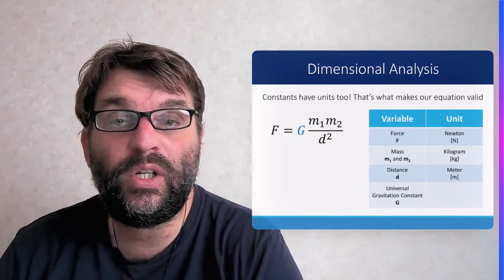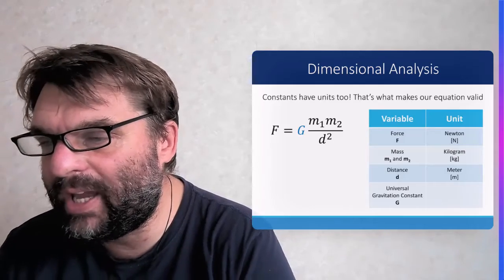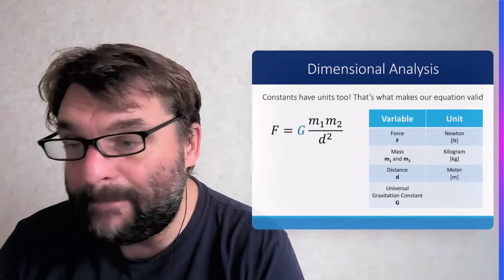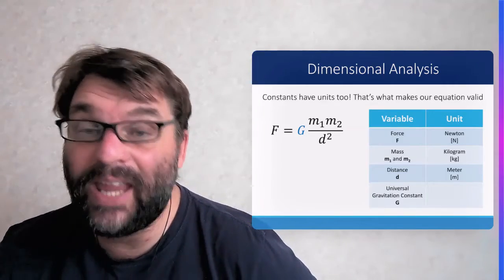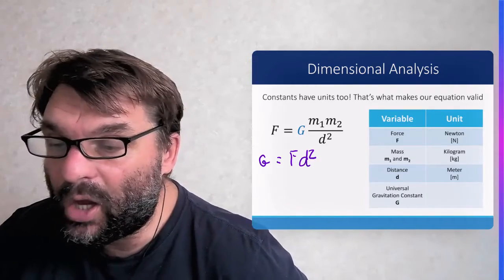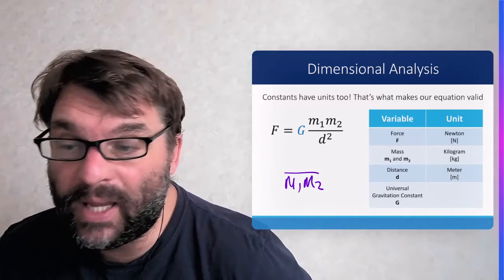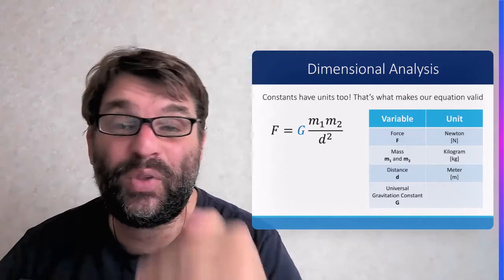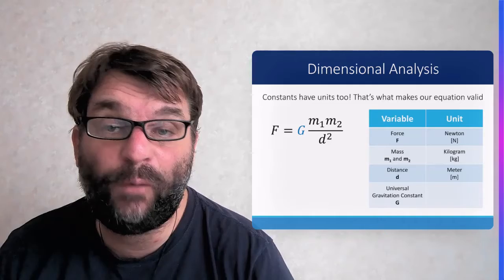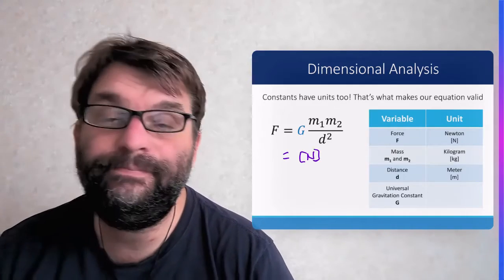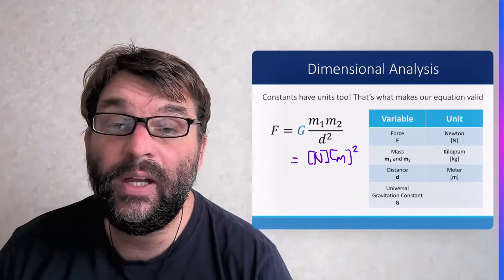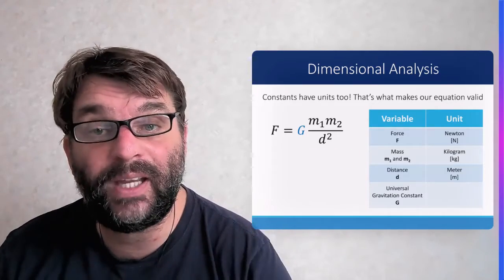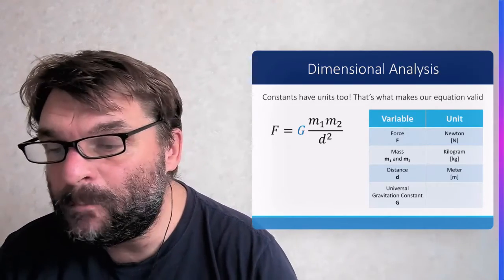Okay, so we want to find g. So if we rearrange that equation, g will equal F times d squared over m1 times m2. And then we can just plug in the units. Okay, so the units of force are newtons. The units of distance are meters, but we have two of them, so multiply together: meters squared.